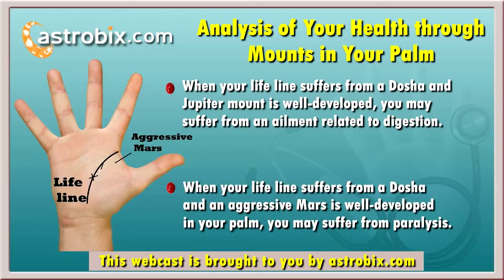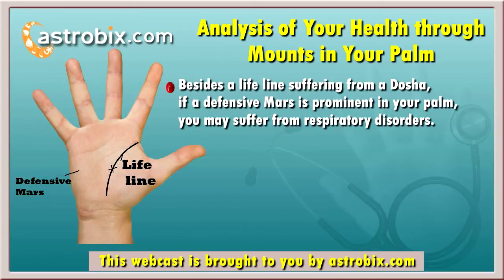Besides a lifeline suffering from a dosha, if an aggressive mount is well developed in your palm, there are chances that you may suffer from paralysis. Moreover, if your lifeline suffers from a dosha and a defensive mount is prominent or strong, you may have to struggle with respiratory disorders in your body.